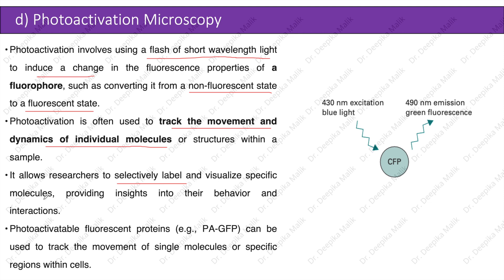Photoactivatable fluorescent proteins can be used to track the movement of single molecules or specific regions within cells — for example, PA-GFP. The diagram shows a simple photoactivation example where CFP, a fluorescent molecule, is excited with blue light at 430 nanometers and gives an emission at 490 nanometers with green color fluorescence.